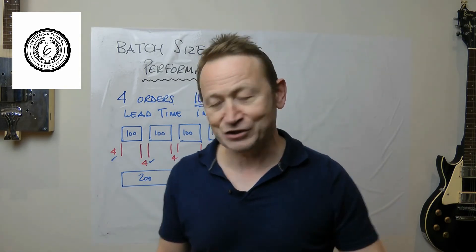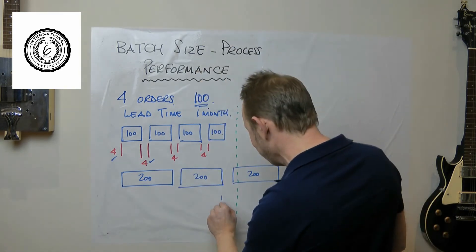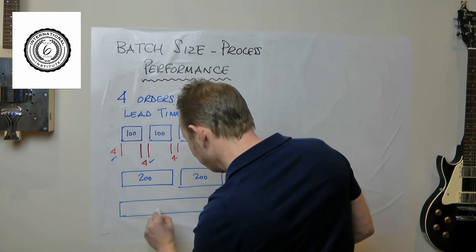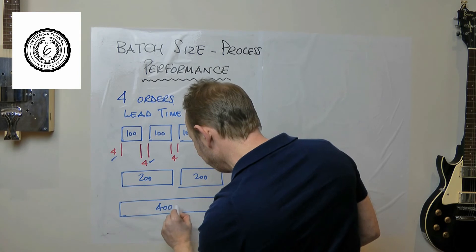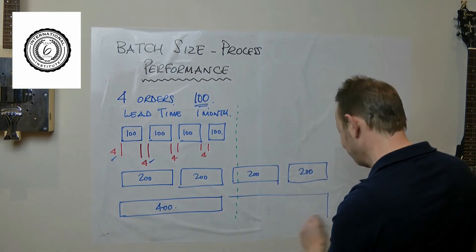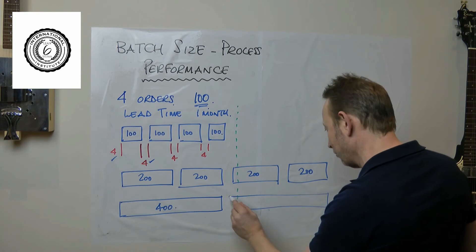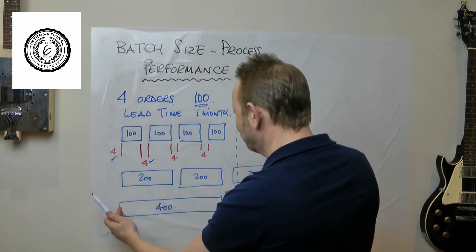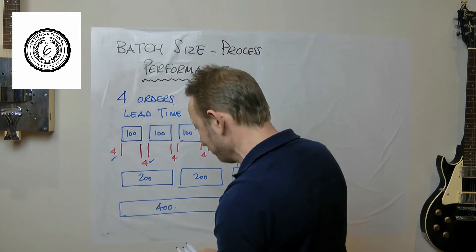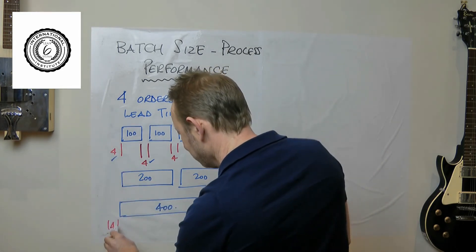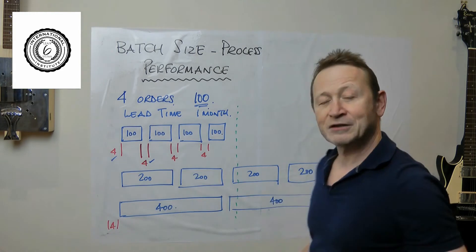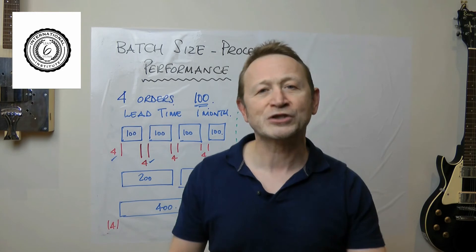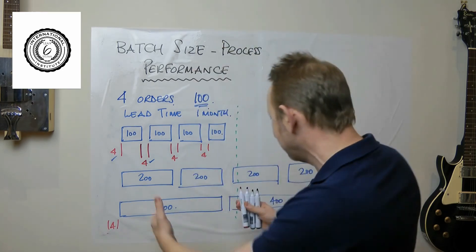So then there's a danger that you go, well why don't we increase the batch size again? And now we start doing them in four hundreds like this. Now we're doing one order instead of four orders, but we've only got one setup time. Look at the productivity gains, look at the capacity we've got. People keep saying we are out of capacity.